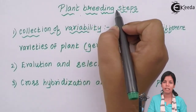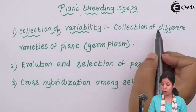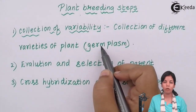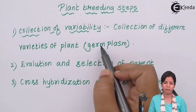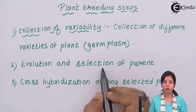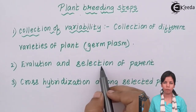The steps of plant breeding are: first, collection of variability — collection of different varieties of plants or germ plasm. In this step you collect different varieties of crops from different regions of India depending upon the qualities they have. If you have to do breeding of sugarcane, you collect sugarcane from all parts of the country. The next step is evaluation and selection of parents, where you select two sugarcane varieties that have greater sugar content or are more juicy and affordable to grow.